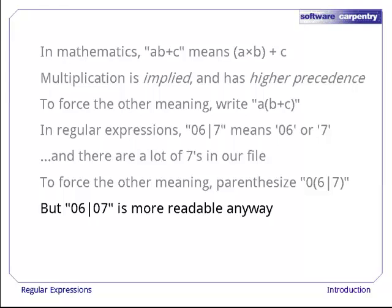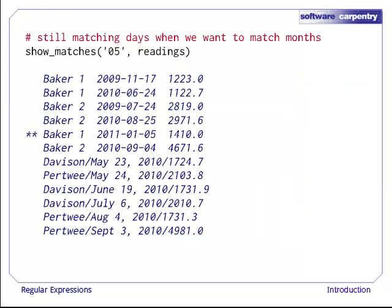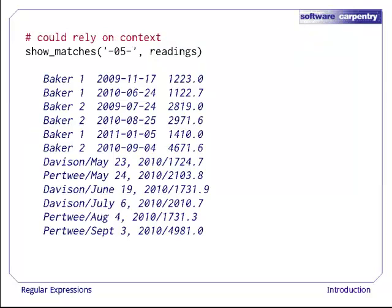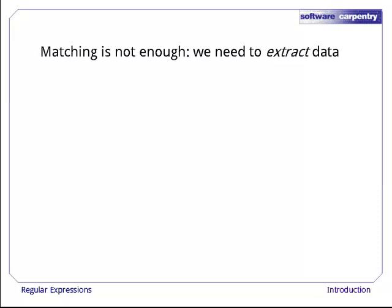Let's go back to our function and our data. If we do matches for 05, as we said earlier, we are pulling up records that have 05 as the day rather than as the month. We can force our match to do the right thing by taking advantage of context. If we want to match a month, there should be a dash before and after the numbers. If we try to match dash 05 dash, we show no matches, which is the correct answer. We don't have any readings in this sample of our data set from May.